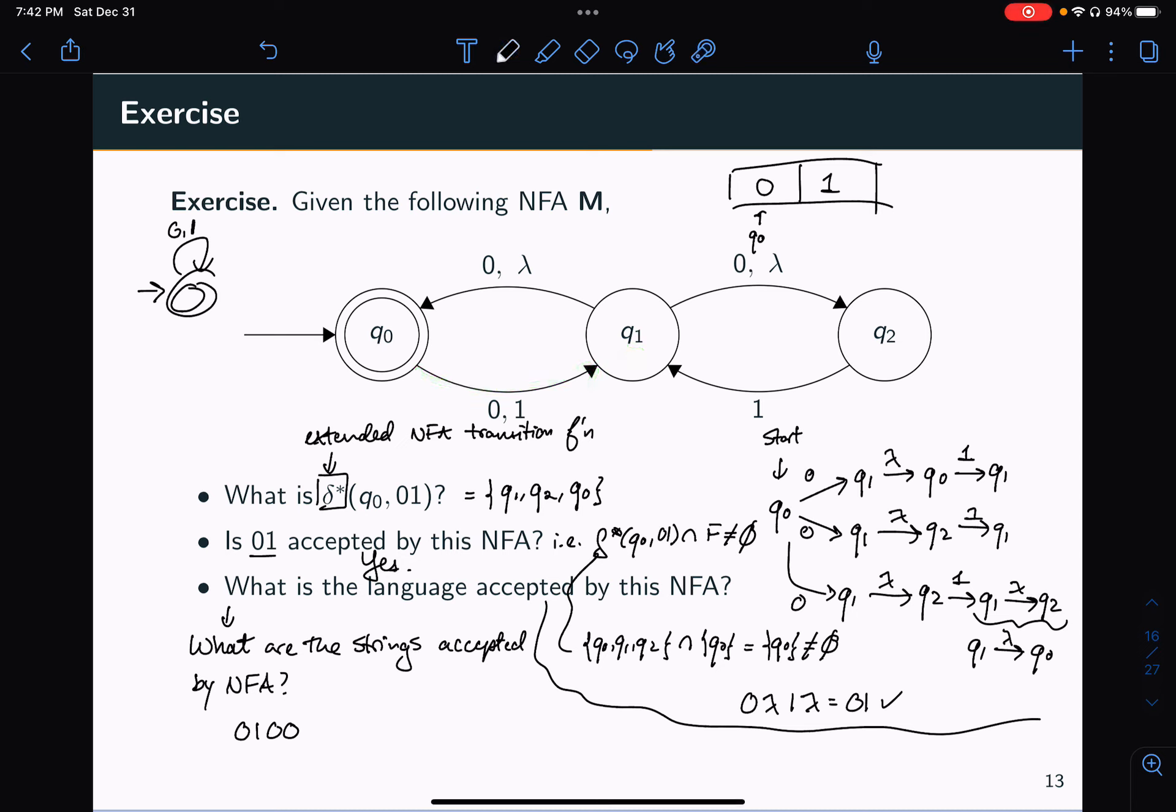And so actually, the claim that I make is that the language accepted by M is sigma star, where sigma is 0, 1. And so in other words, the language accepted by M is 0, 1 star. And to really see that this is true,